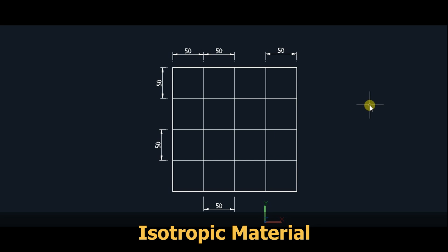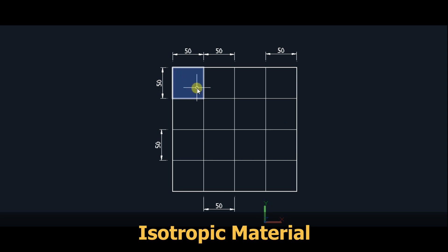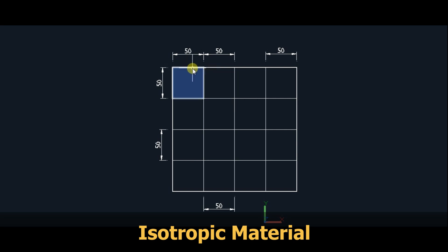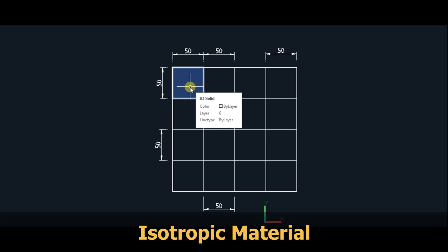Now let us see what is an isotropic material. An isotropic material means its property in all directions will be the same. Take this square — its length in one direction is 50, and in the other direction also it is 50. So in both these directions, the properties are same. If you consider Young's modulus in this direction, say it is made up of steel, it will be 2.18 × 10⁵ Newton per m². So in the other direction also, it will be the same.